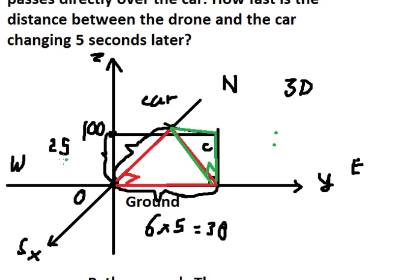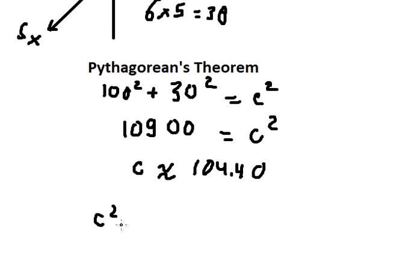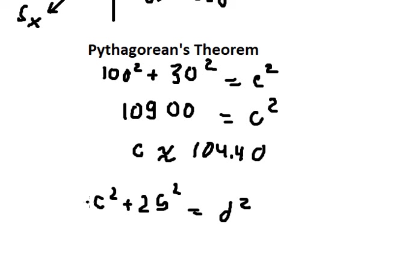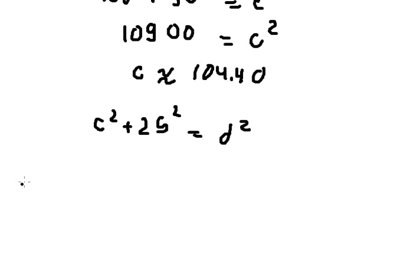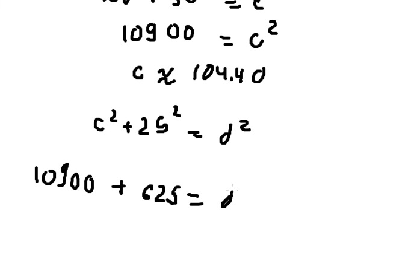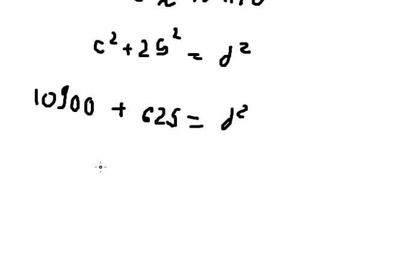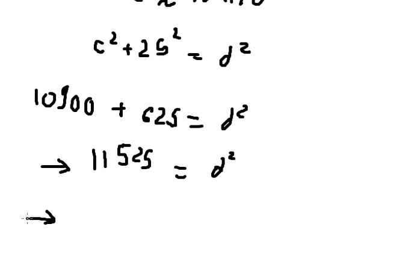After we have c, we know we have 25, so this one gives us 25. We can find d: c squared plus 25 squared equals d squared. We have c squared that is about 10,900, plus 625, so d squared equals 11,525. Therefore d equals the square root of 11,525, which is the square root of 461.